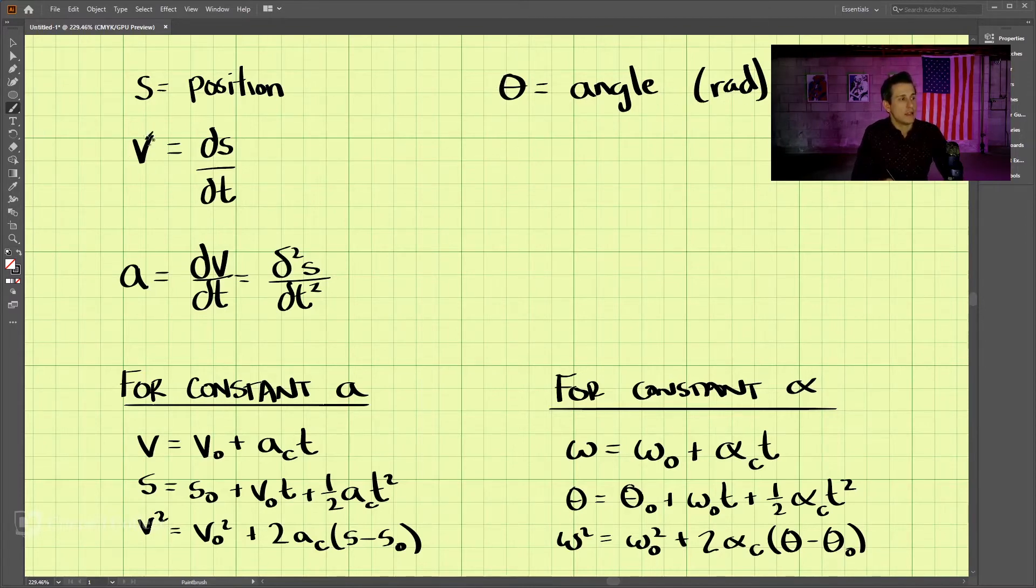For velocity, we have velocity is equal to the derivative of the position with respect to time. When we're talking about angles and rotation, we have the angular velocity, denoted by the Greek letter omega. This is not a W, this is omega. That is equal to the derivative of the angle with respect to time. The units on omega are usually radians per second. Degrees per second maybe, but radians per second is more common.